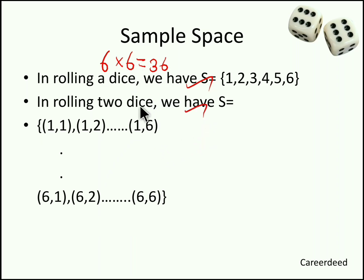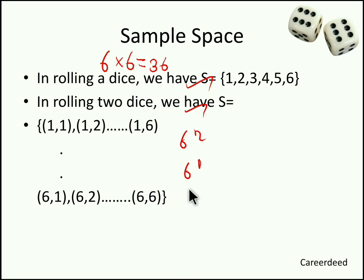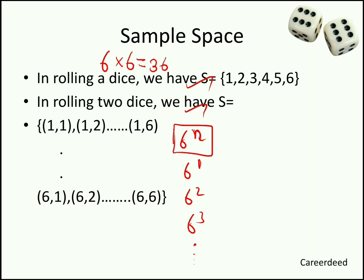While rolling 3 dice, it is 6 × 6 × 6 = 216. Simply, we can say 6 to the power n is the way to find the total sample space while rolling n dice. So 6² for 2 dice, 6³ for 3 dice, and so on. Keep 6^n in mind to find the total sample space while rolling n dice.